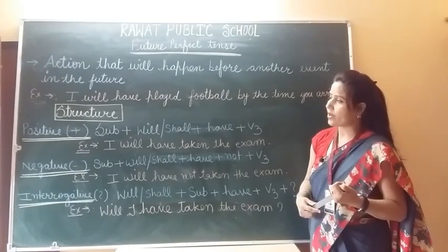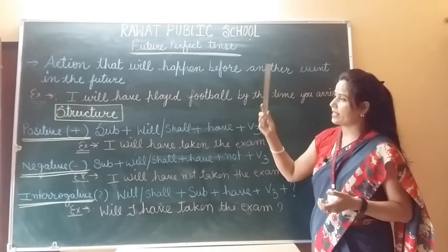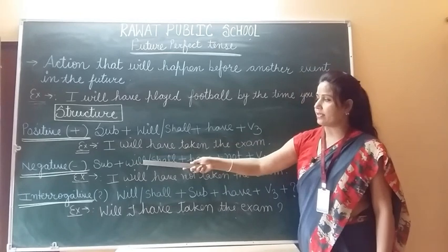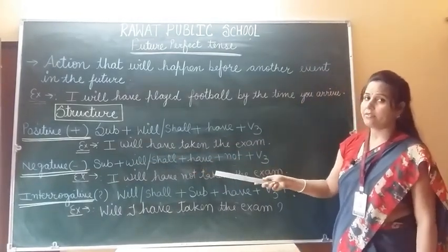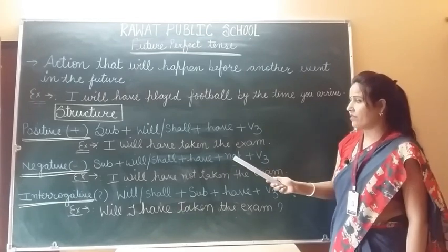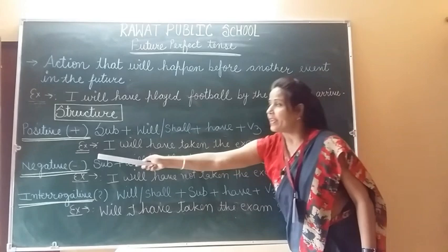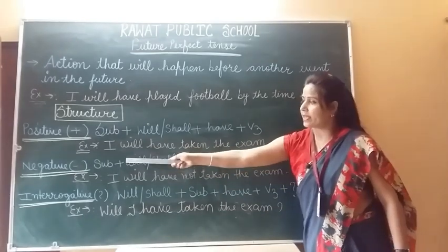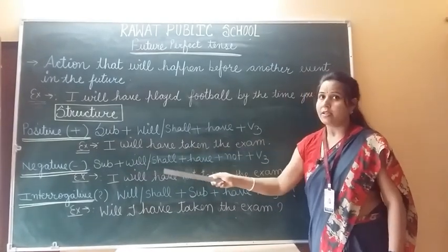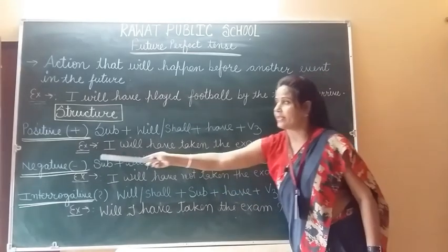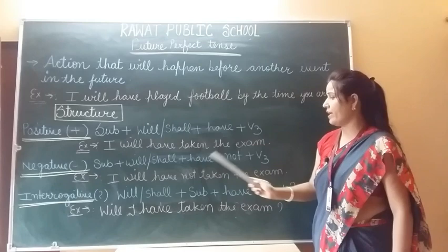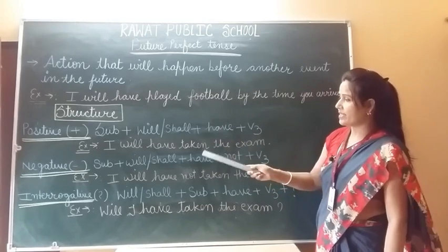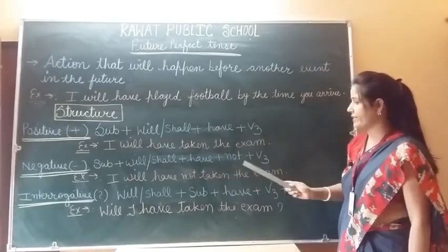Negative structure: Subject + will/shall + have + not + verb third form. We add 'not' because it is a negative sentence. For example: 'I will have not taken the exam.'